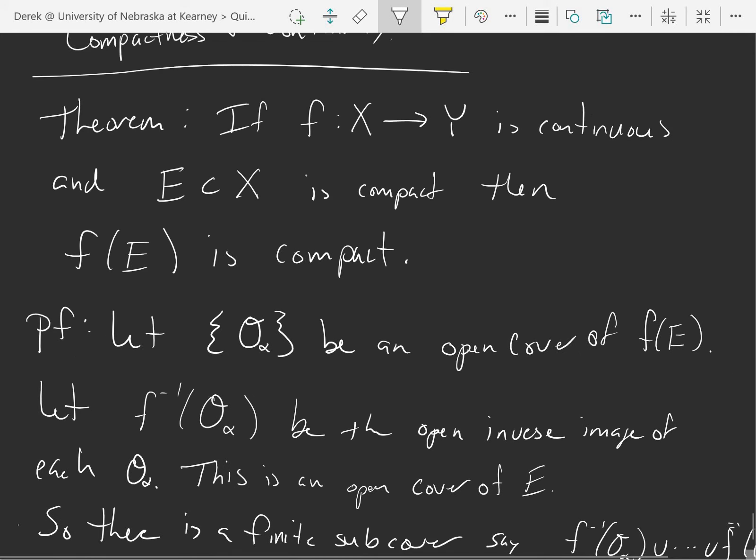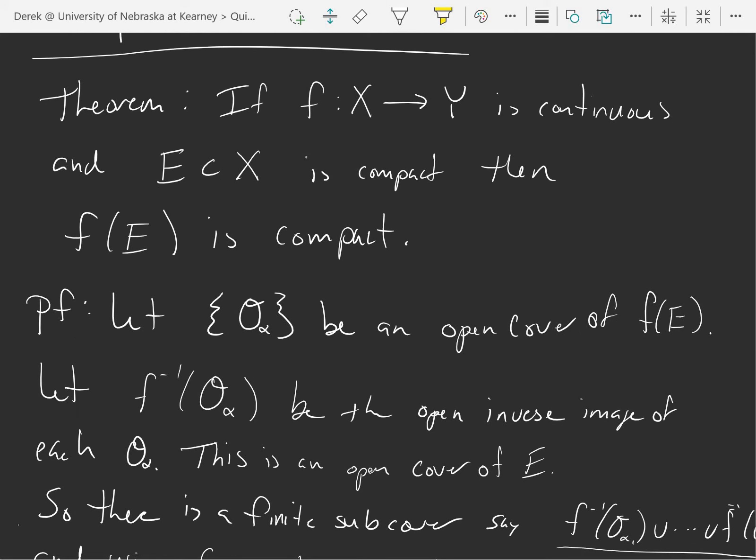So the theorem. If I take a continuous map, I have a compact set. If I hit that compact set with the continuous map, I end up with another compact set.